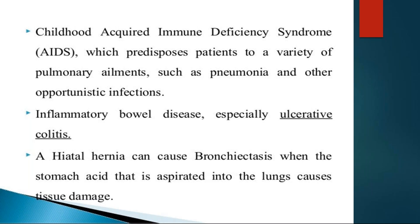The next common cause is childhood acquired immunodeficiency syndrome, which predisposes patients to pneumonia and other opportunistic infections. The next common cause is inflammatory bowel disease; among IBD, ulcerative colitis patients are more prone for bronchiectasis. Other GI causes include hiatal hernia, where stomach acid is aspirated into the lungs, predisposing to aspiration and leading to tissue damage and bronchiectasis.